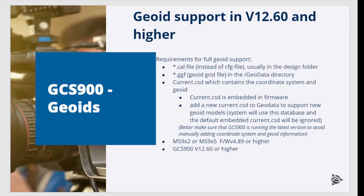Apart from running version 1260 on the control box, there are other requirements for full GeoEat support. The coordinate system information must now be provided to GCS 900 in a CAL file instead of a configuration file. The coordinate system database, current.csd, used by GCS 900 must contain the GeoEat and coordinate system information. Therefore, it is an advantage to run the latest GCS version, since the firmware-embedded current.csd will also be the latest available version and contain the most recent coordinate systems.